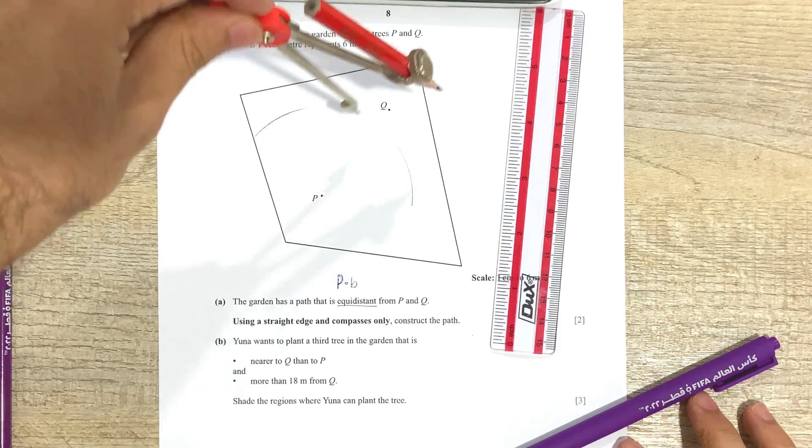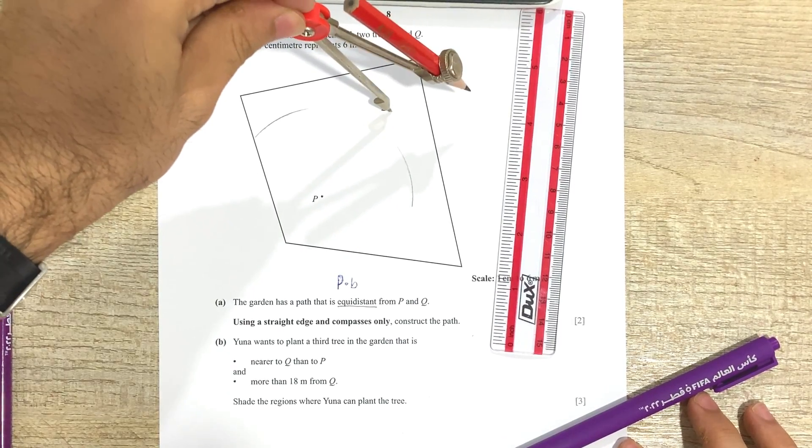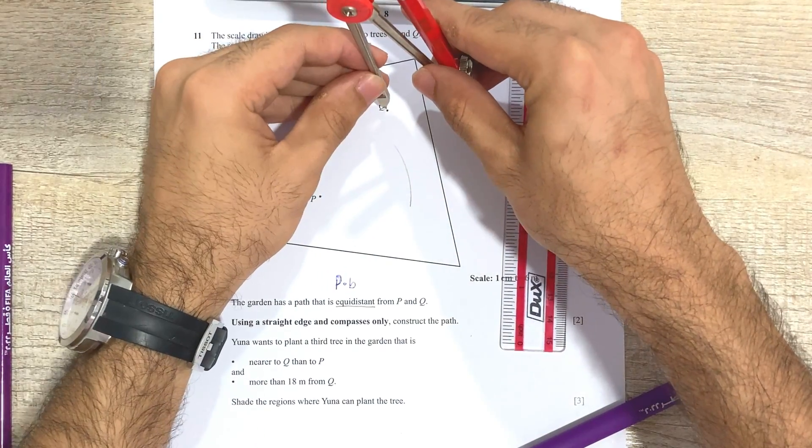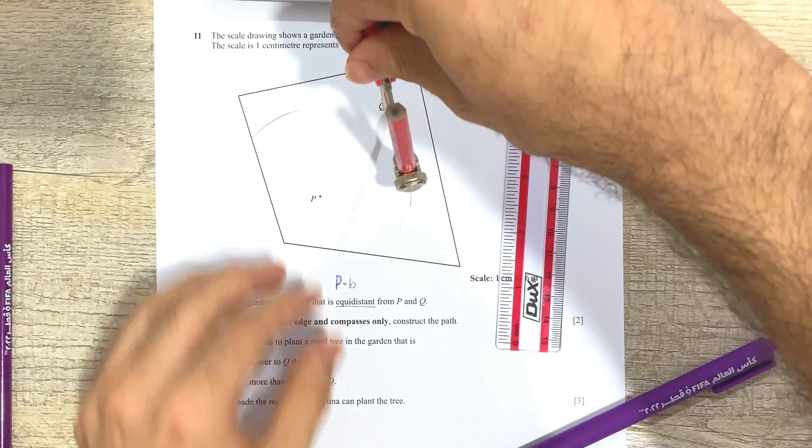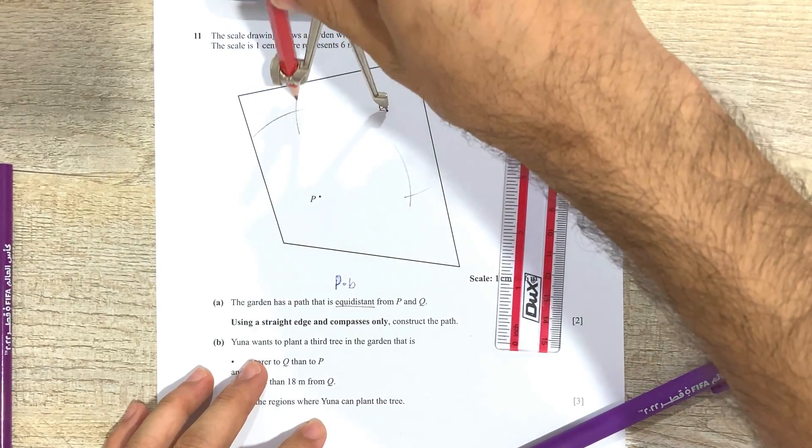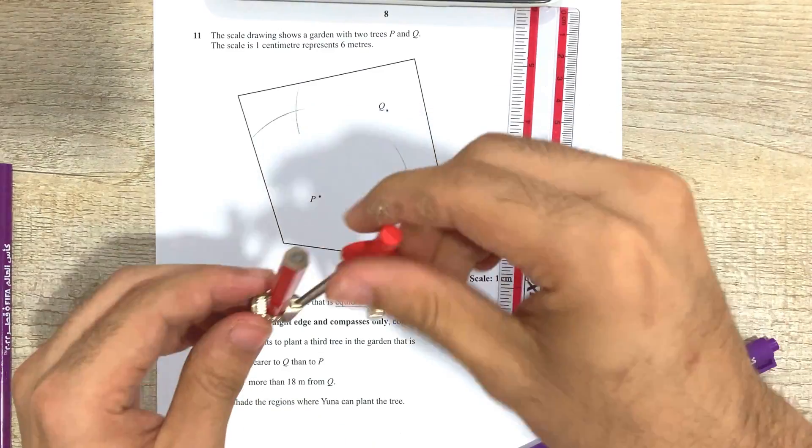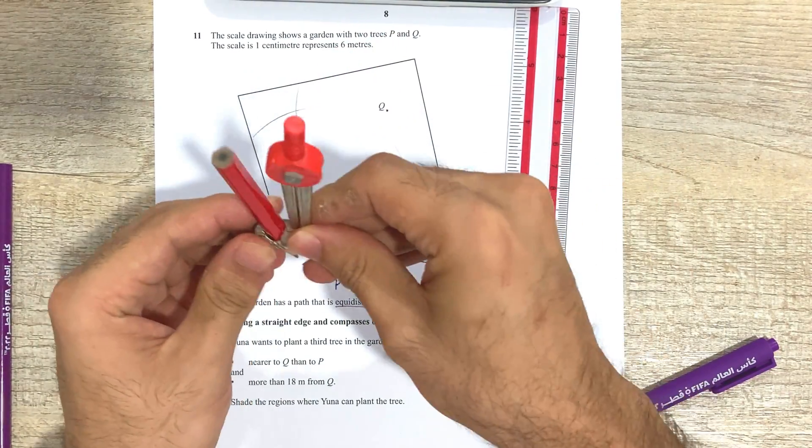And then I'm going to repeat the process, but this time my compass is going to be at the point Q. Okay, so make sure not to mess it up. So one arc over here and one arc over here.